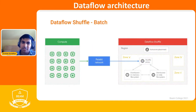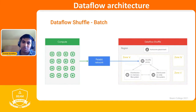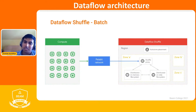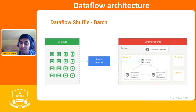Another feature is the Dataflow shuffle service for batch jobs. When your pipeline reaches a resource-intensive step such as group-by or co-group-by, it sends that work to the shuffle service. The shuffle service performs the computation and sends results back to your Dataflow pipeline, which then continues as normal.